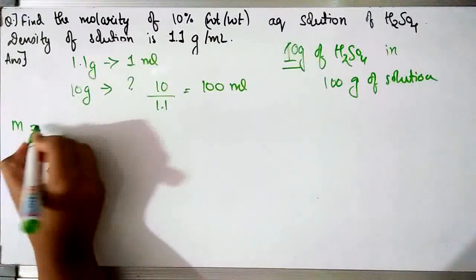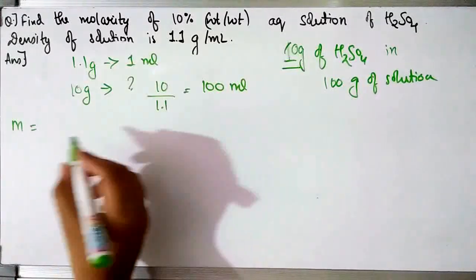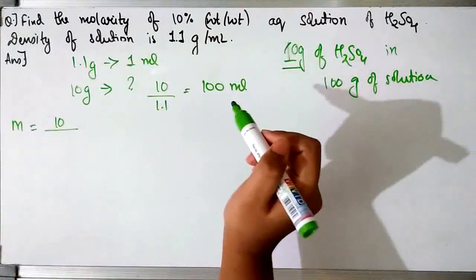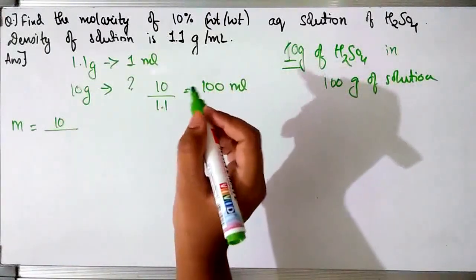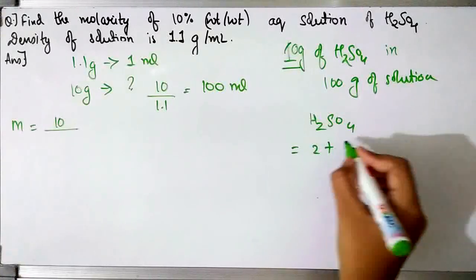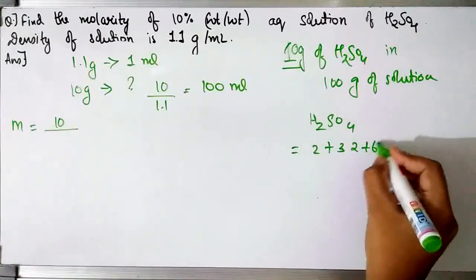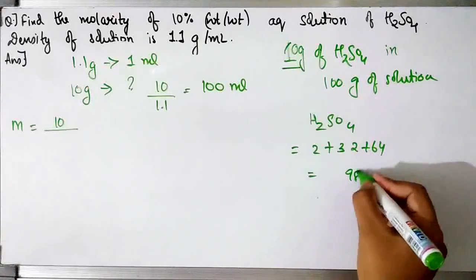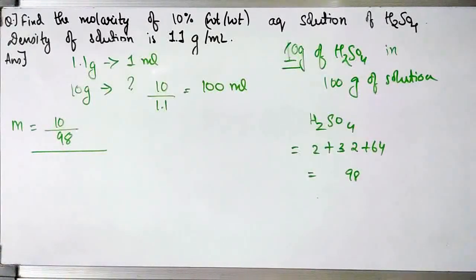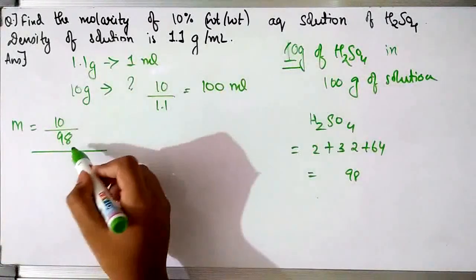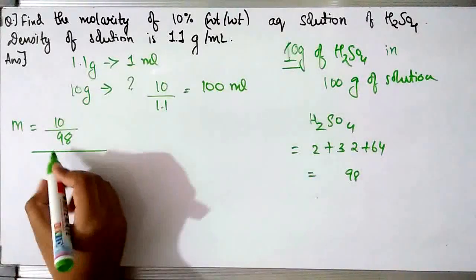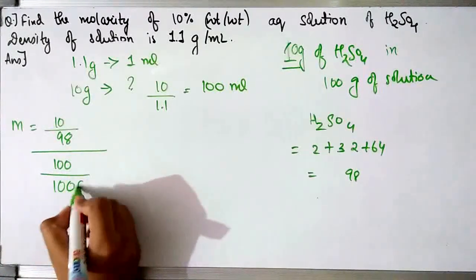Now we can find the molarity. Molarity equals number of moles of solute upon volume of solution in litres. In place of number of moles we write given mass 10 grams upon molar mass of H₂SO₄. The molar mass of H₂SO₄ is 2 plus 32 plus 64, which gives 98. The volume in litres is 100 by 1000.